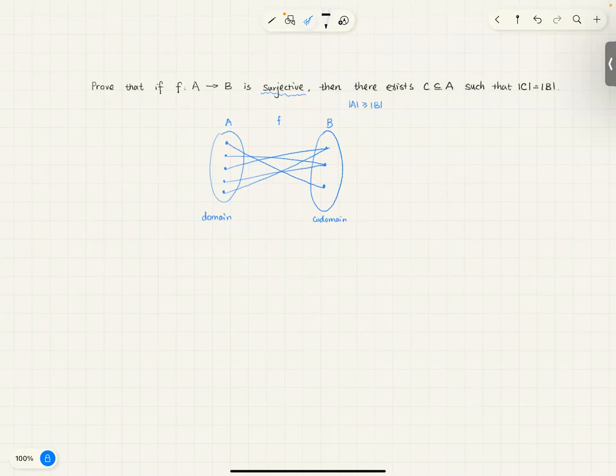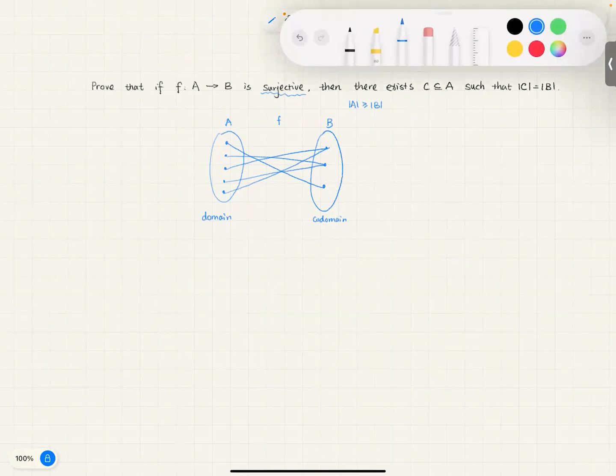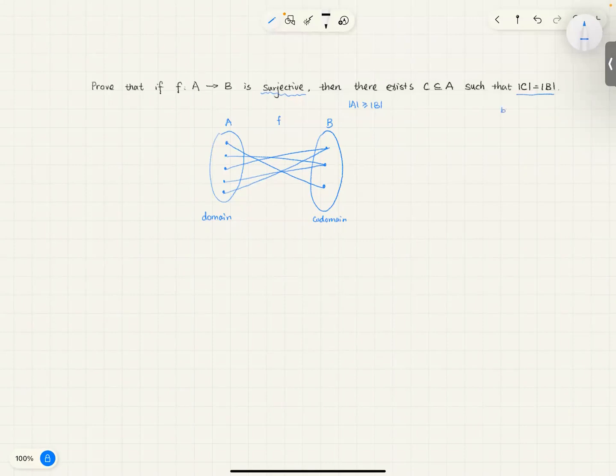But the thing is, how do we find the set C? The key here is, first of all, you know that to prove two sets have the same cardinality, we need a bijection, so this is telling you, I need a bijection from C to B. Now, since I need a bijection, that means for every element in B here, I can only have one element mapped to each one of them. But right now, if you look up here, this one has two things mapped to it, this one has two things mapped to it, this one has only one thing.